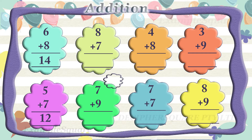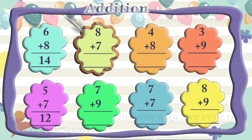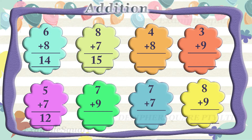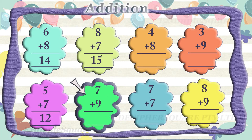What is 8 plus 7? 8 plus 7 equals 15. What is 7 plus 9? 7 plus 9 equals 16.